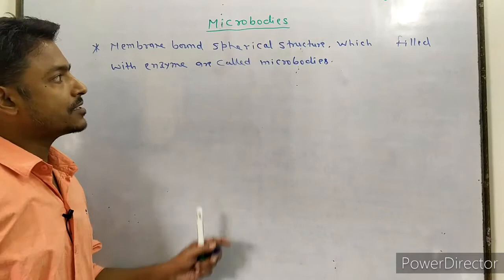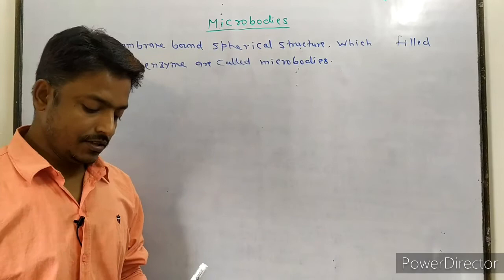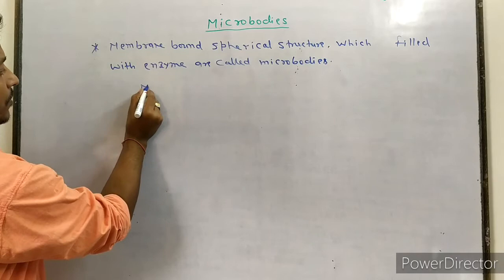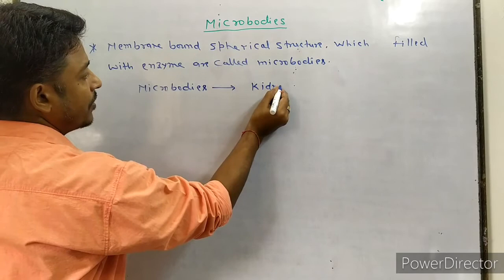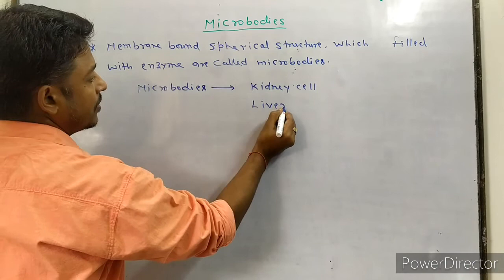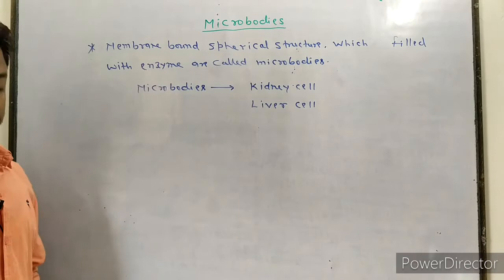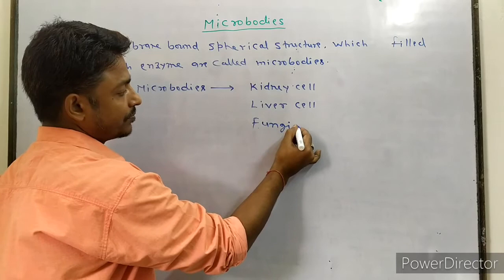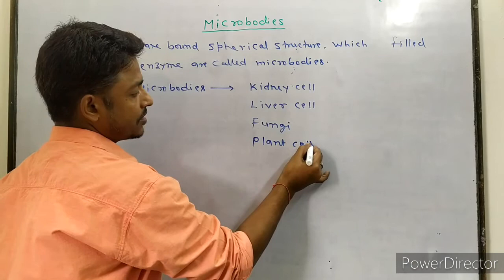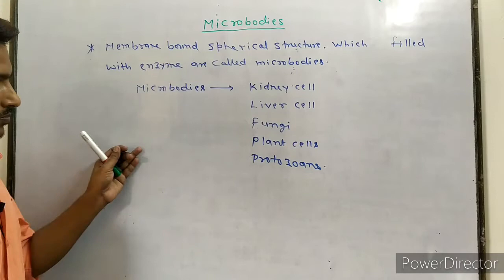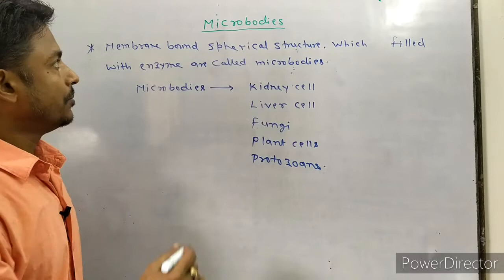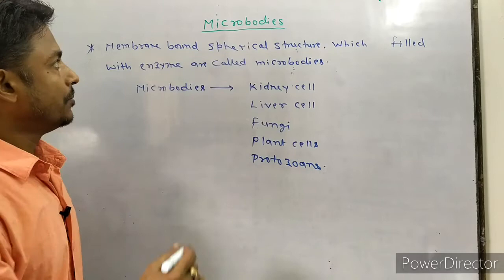Membrane-bound spherical structures which are filled with enzymes are called microbodies. Microbodies are present in kidney cells, liver cells, fungi, plant cells, and protozoan. Microbodies are present in these cells.